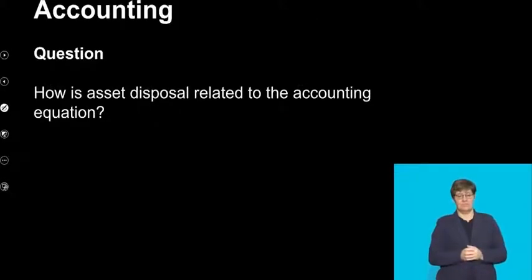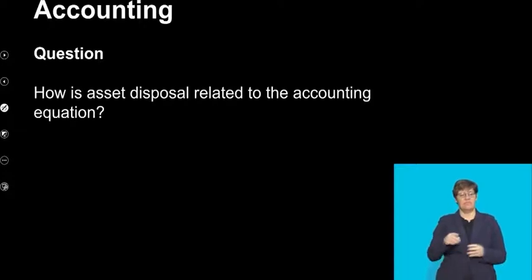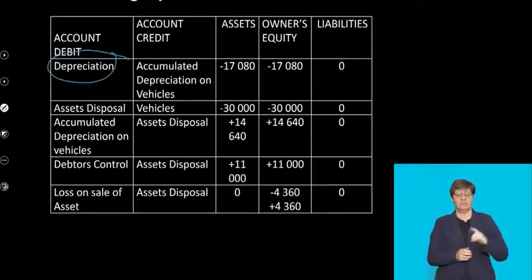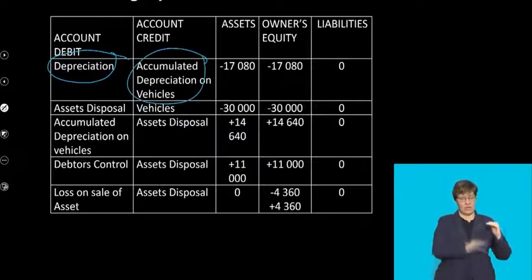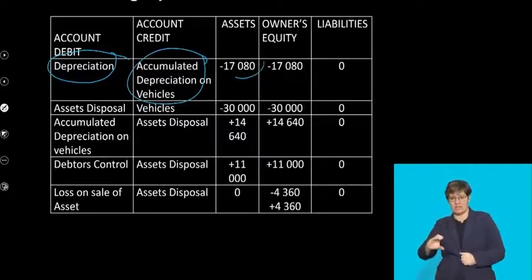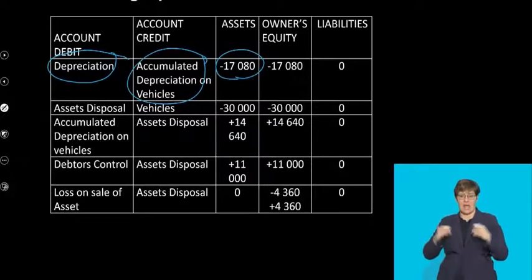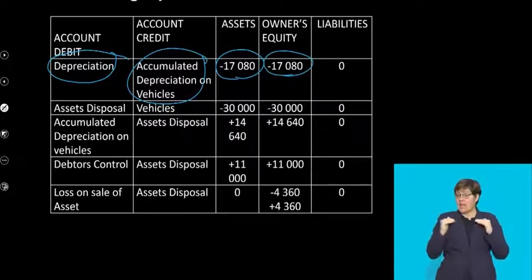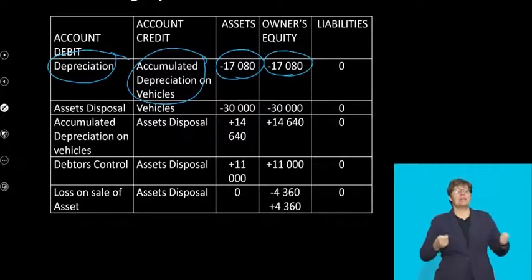How will we look at Asset Disposal in terms of the accounting equation? Step number one: debit depreciation, credit accumulated depreciation. Your assets are decreasing because accumulated depreciation is a negative asset, and your owner's equity is decreasing because your expense account decreases the owner's equity. Liabilities remain unchanged.